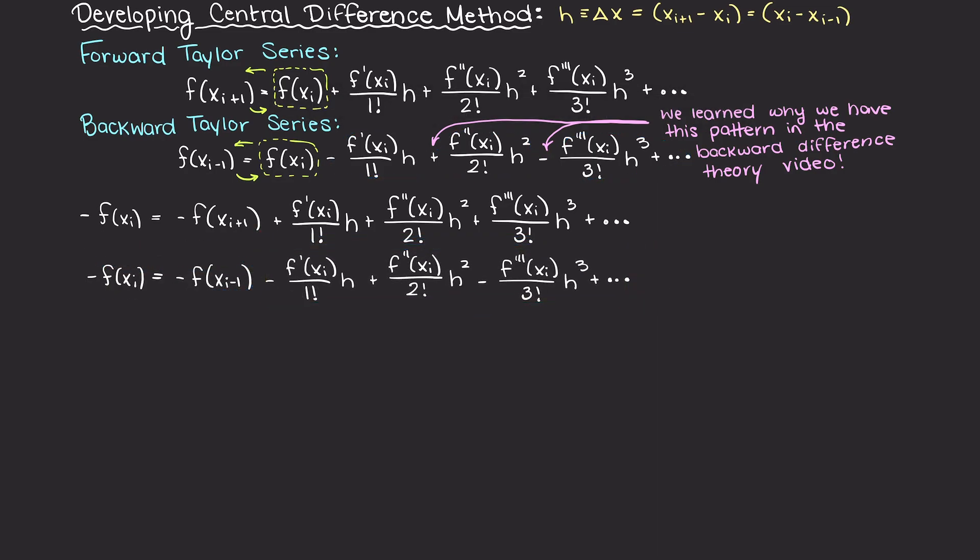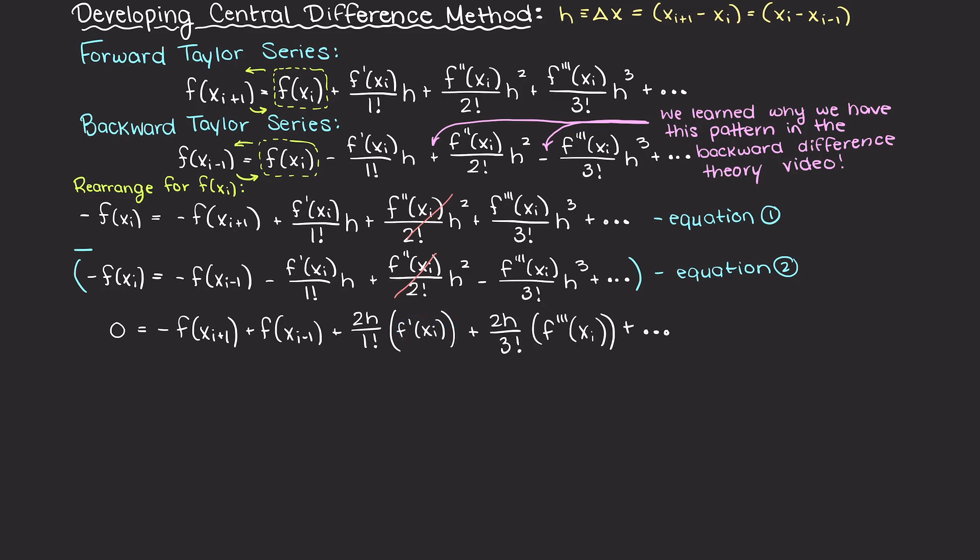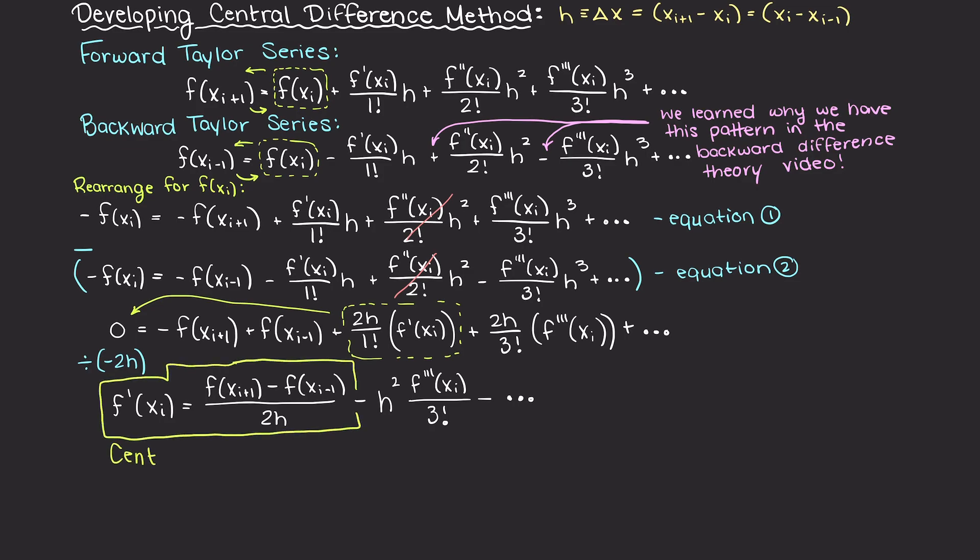We can then rearrange both of these terms for f of xi. Now, let's combine these two equations by subtracting equation 1 from equation 2. As you can see all of our initially even terms within equation 2 are going to become negative with this subtraction, and cancel the terms in equation 1. Then we can solve for the first derivative of xi, which is what we have been looking for. Then let's divide by minus 2h to isolate for the derivative, and we end up with the following terms.